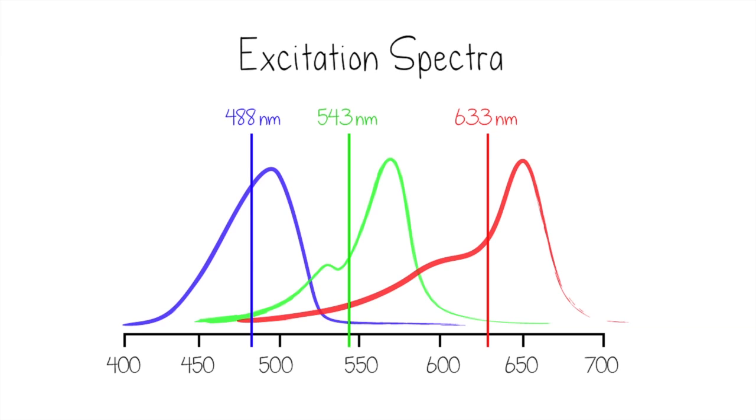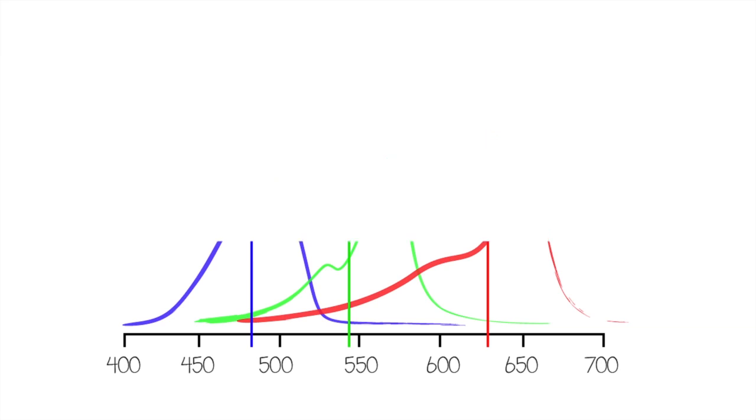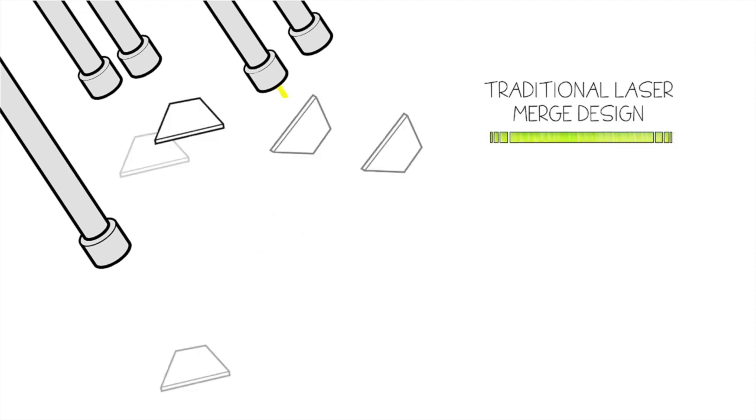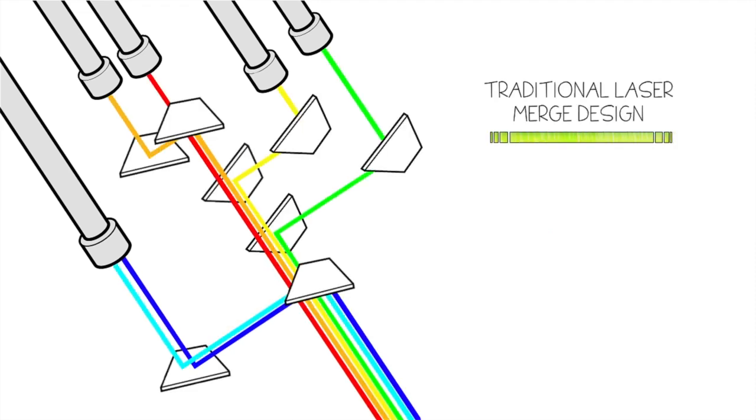To effectively excite the various fluorophores in a sample, multiple lasers are required. However, each laser adds bulk to the system, each laser generates heat, and each laser consumes energy. The individual lasers must be combined into a single imaging light path, which requires additional optics.